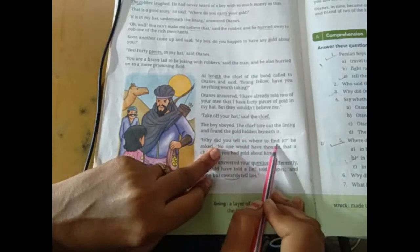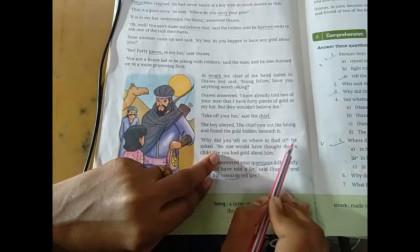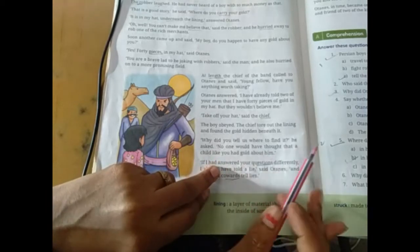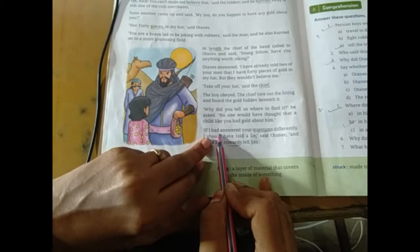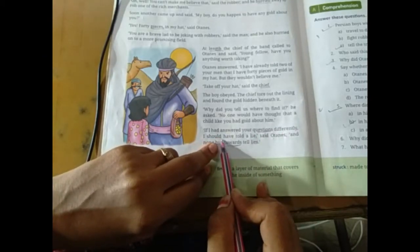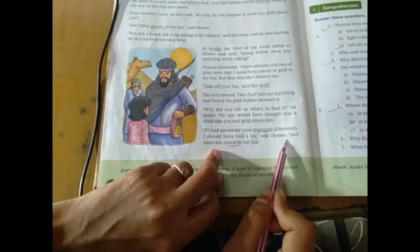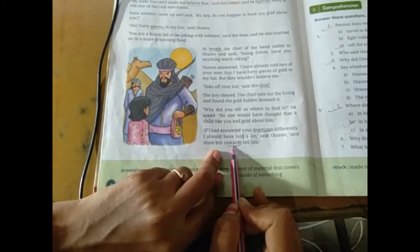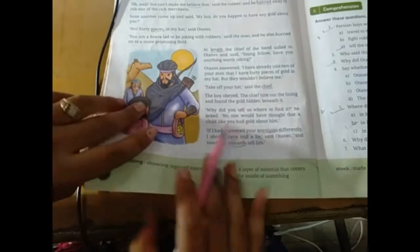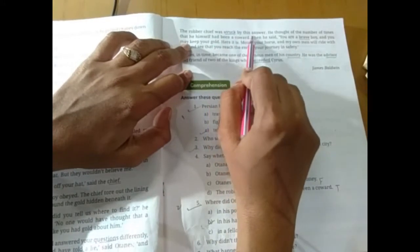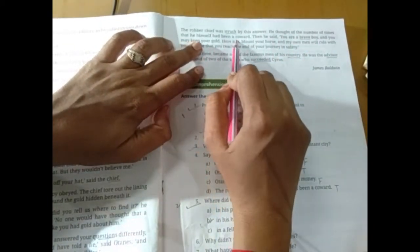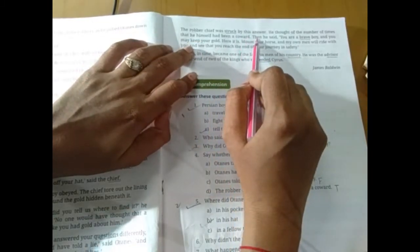The robber's chief was struck by this answer. Why did you tell us where to find it? No one would have thought that a child like you had gold about it. If I had answered your question differently, I would have told a lie, said Hortense.